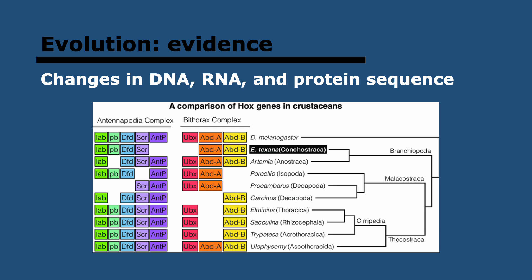Let's look at all the different evidence there is for evolution. First of all, there are differences in DNA, RNA, and protein sequence. DNA gets transcribed into RNA, which gets translated into proteins. When we look at the same genes in different species, we can see differences in the gene. The more closely related two species are, the fewer differences there will be in base sequence. The Hox gene is present in most animals because it's required for development, and this can only be explained by evolution — it was a common gene that then diverged slowly. There will be differences in genes and therefore differences in the protein amino acid sequence. This is the first proof that evolution exists.